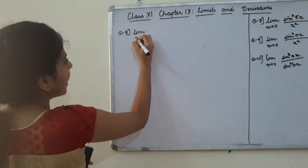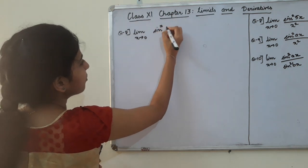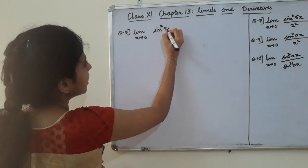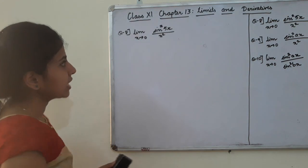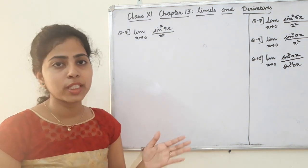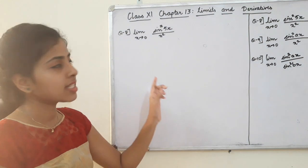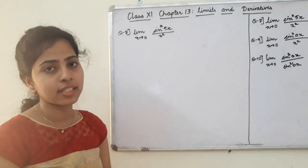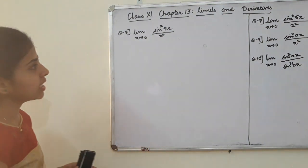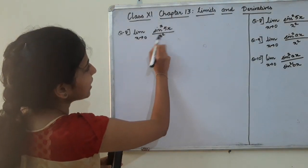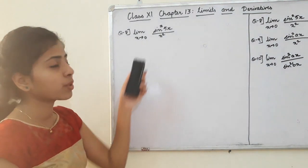Limit x tending to 0, sin squared 5x divided by x squared. If we don't know the class, we don't know the square. This is sin 5x divided by x — we will learn that. We have sin squared 5x divided by x squared. Square is the concept.